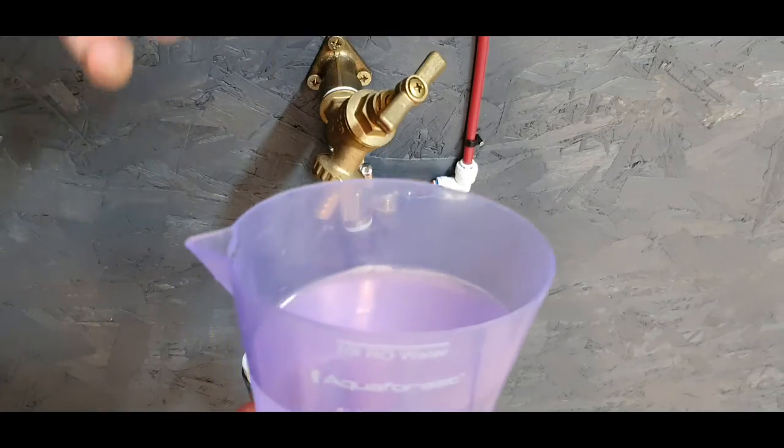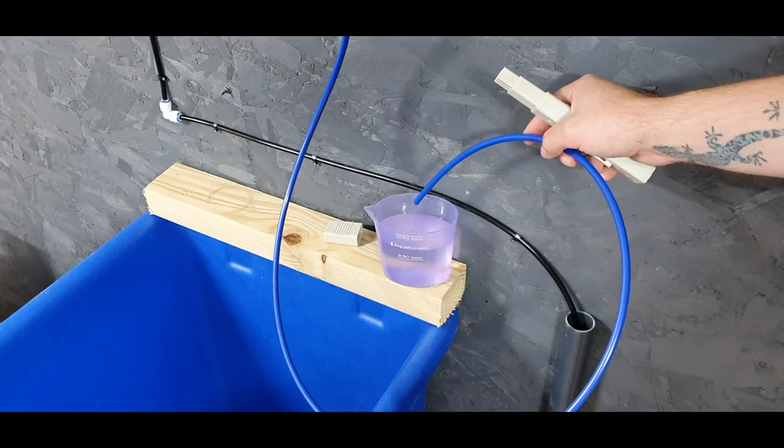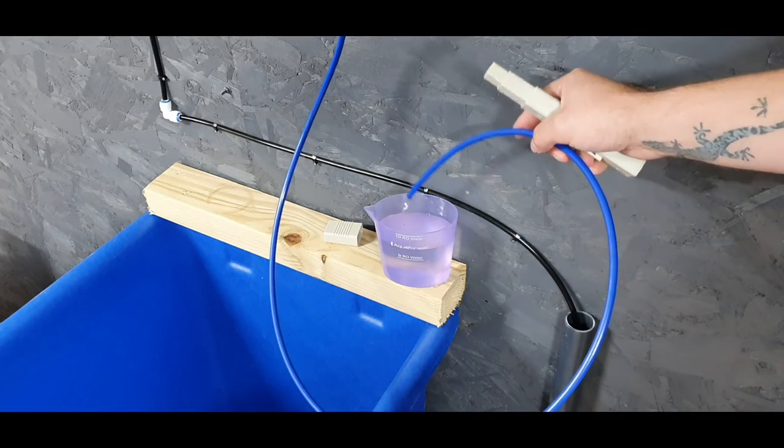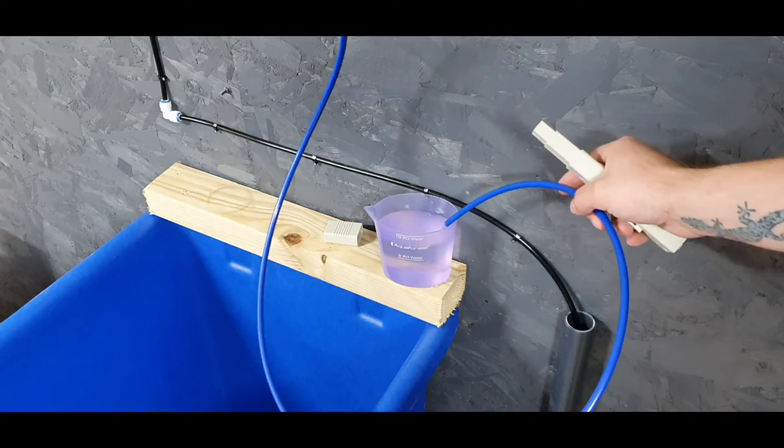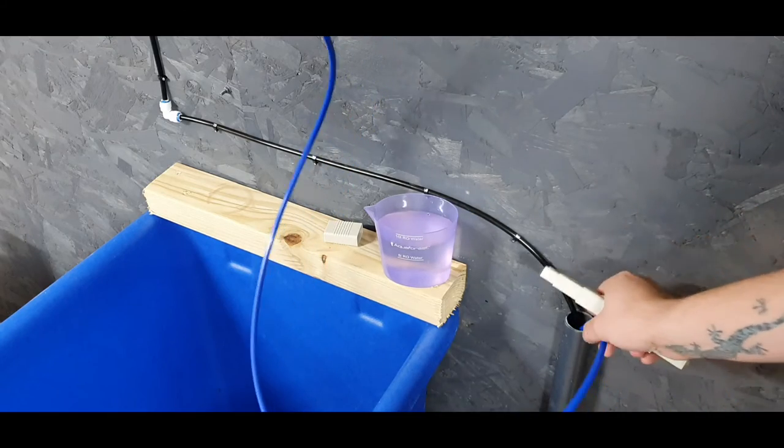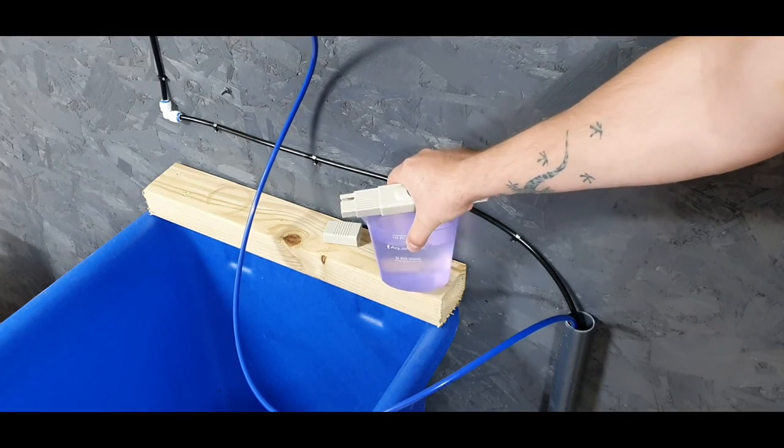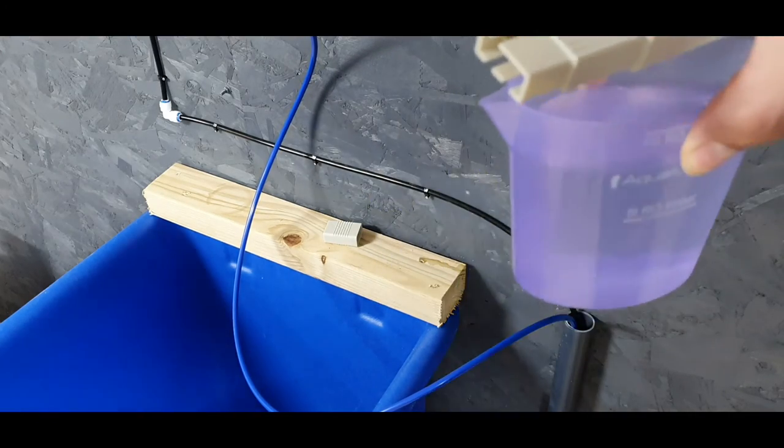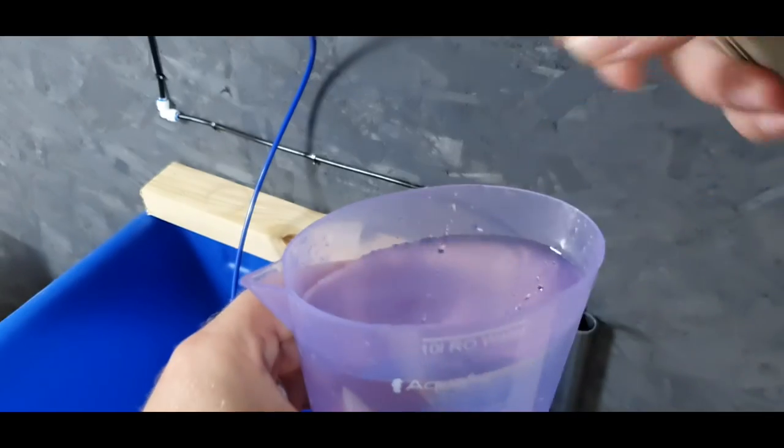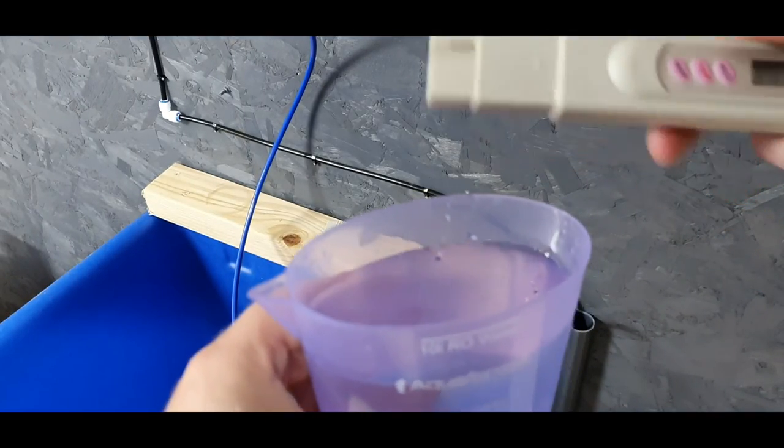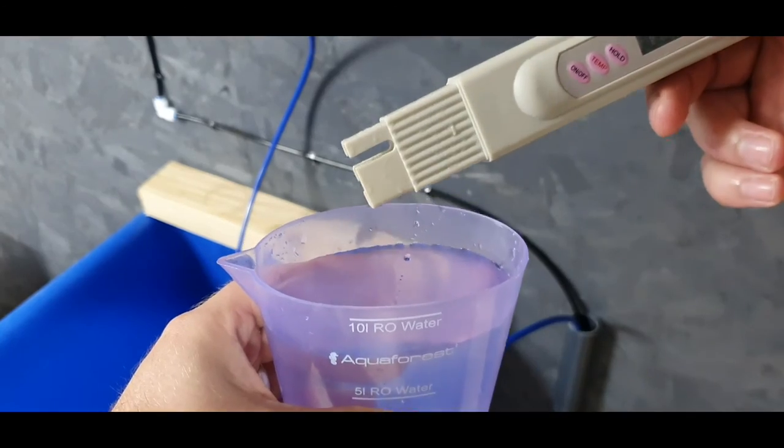Right, let's just check what the TDS from the RO filter is then. A good result is around 95 to 98% removal of the TDS from the water. So I think we're expecting somewhere between maybe 1 ppm to maybe 5 ppm because our tap water is quite good anyway.